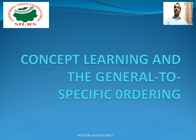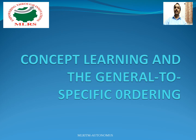In this video, we will know about concept learning and the general to specific ordering. The problem of inducing general functions from specific training examples is central to learning. For example, birds are a subset of animals — bird is a specific example and animal is general. Concept learning is acquiring the definition of a general category given a sample of positive and negative training examples of the category.